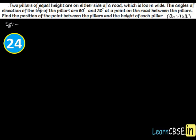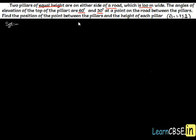In this question, two pillars of equal height are on either side of a road and the width of the road is 100 meters. The angles of elevation of the top of pillars are 60 degrees and 30 degrees, observed from a point which is on the road in between the pillars. We have to find the position of the point between the pillars and the height of each pillar.